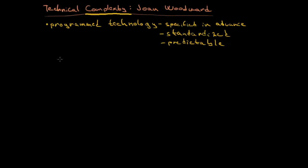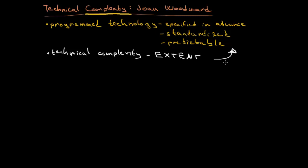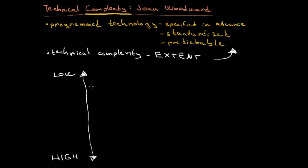Closely interlinked with programmed technology is the notion of complexity. This tells us the extent of all the above-mentioned points — whether the task is complex, whether our product is predictable, standardized, and how well we can specify it in advance. We can bring a scale from low technical complexity on one end to high on the other, forming a bipolar line.